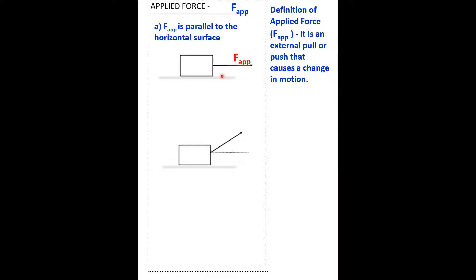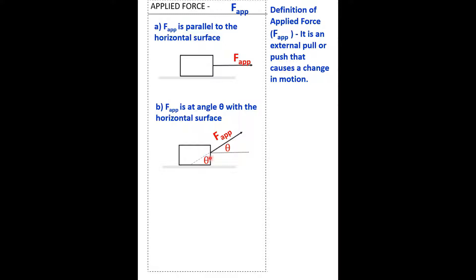This is how we represent it. The second case is an applied force at an angle with the horizontal surface. An angle means that if you extend this line, this angle here and this angle are the same. To represent the diagram in a proper way, we just extend an arrow from about the center of the box that represents the object.